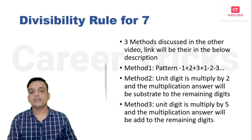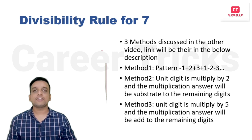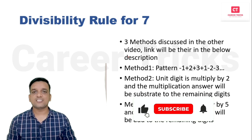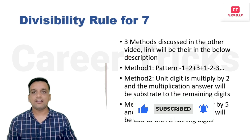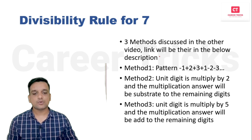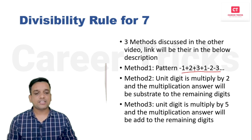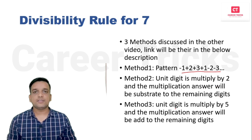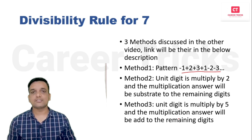Divisibility rule for 7: I already have a dedicated video covering three methods — the link is available in the top right corner and in the description. Briefly: Method 1 uses the pattern −1, +2, +3, +1, −2, −3. Method 2 multiplies the unit digit by 2 and subtracts from the remaining digits. Method 3 multiplies the unit digit by 5 and adds to the remaining digits.